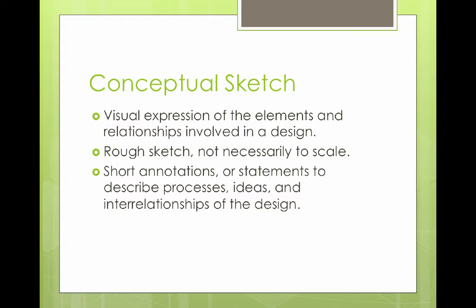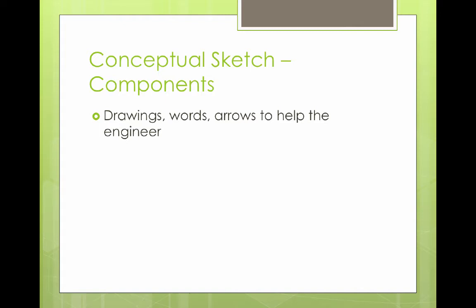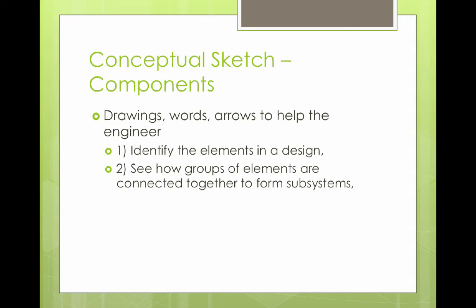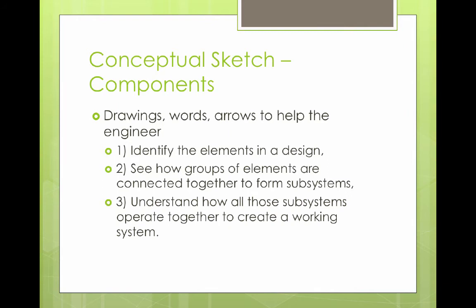Included with the visual drawing are short annotations or statements to describe processes, ideas, and interrelationships of the design. The contents of a conceptual sketch are drawings, annotations or short statements, and arrows meant to help the engineer identify the elements of the design, or each piece of the design, see how the groups of elements are connected together to form subsystems, and understand how all subsystems operate together to create a working system.